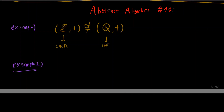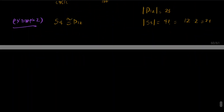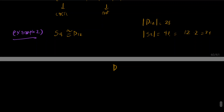Let's give another example. We're going to claim that the symmetric group S4 is not isomorphic to D12. Notice that the two groups have the same order: the order of D12 is 24, and the order of S4 is 4! = 24. So we cannot use order alone here — let's find something else.